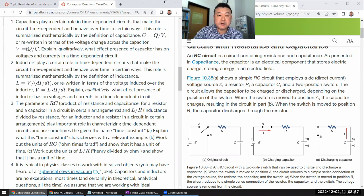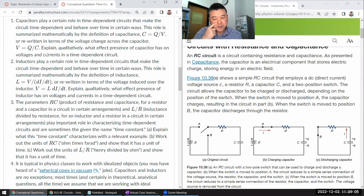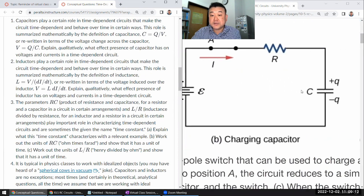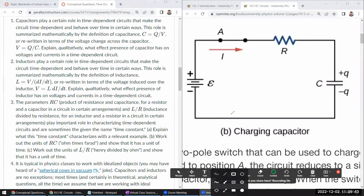So this role summarized mathematically by the definition of capacitance, right? Or rewritten in terms of voltage or capacitor, explain qualitatively what effect the presence of capacitor has on voltages and currents in a time-dependent circuit. So this is the piece that's a little bit conceptually more challenging than the next question. But you can get to it still with a few steps. So the very first step is this expression here. The voltage across capacitor is directly related to the amount of charge on the capacitor.